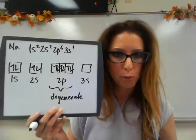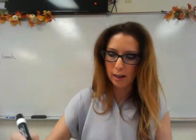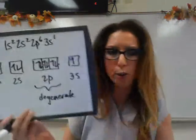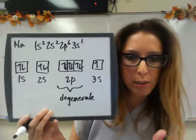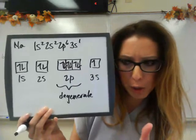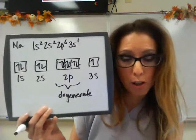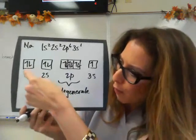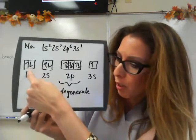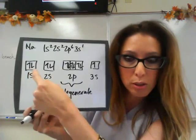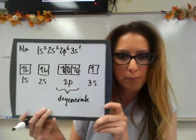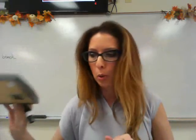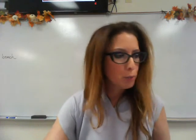In the last orbital, 3S, there is one electron, so I put one half arrow in. Make sure you know Hund's Rule and also the Pauli exclusion principle, which states that electrons occupying the same orbital must have opposite spins — you will never have electrons pointing in the same direction. That's how we do orbital diagrams; now you're ready to do the worksheet.